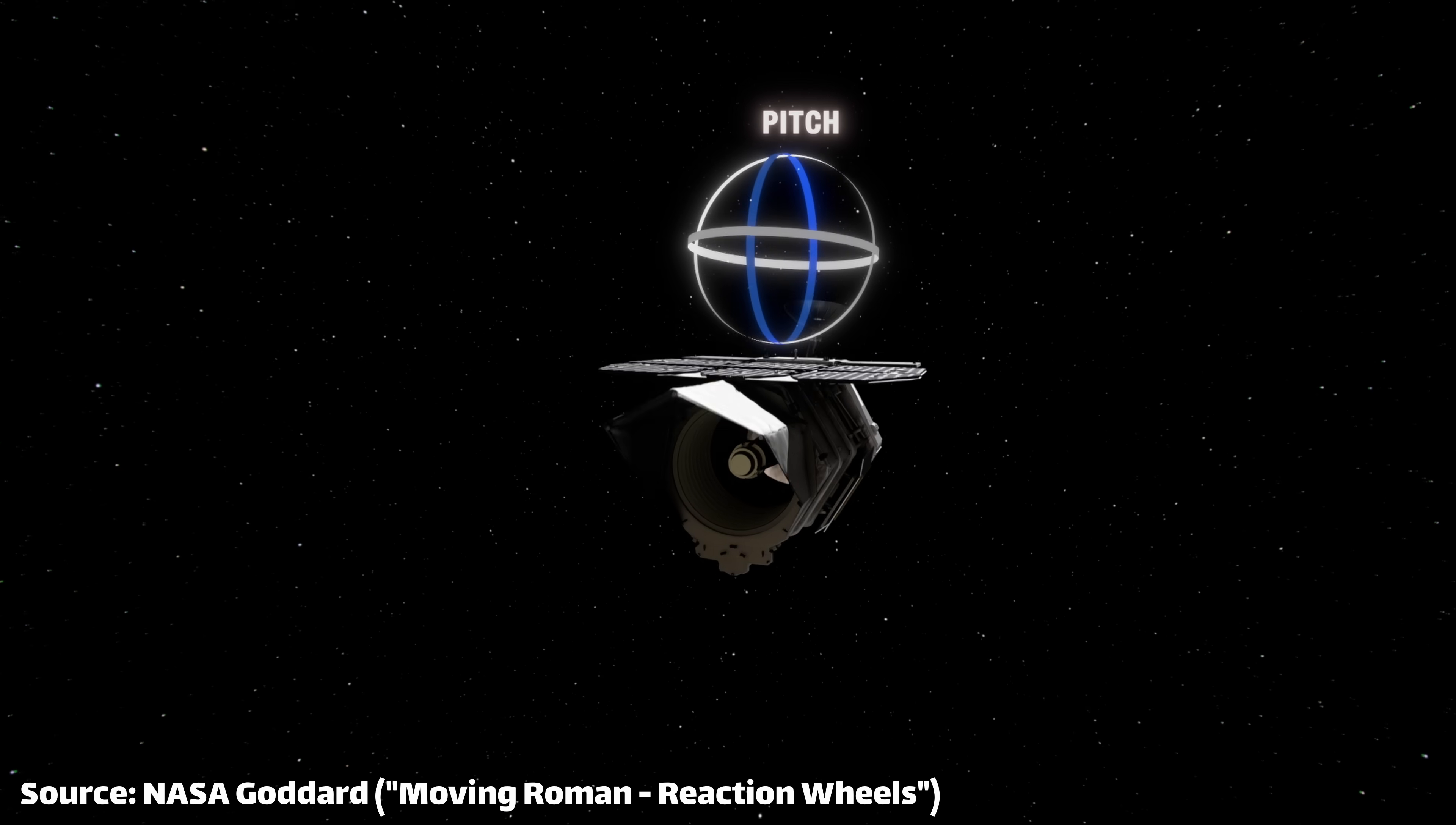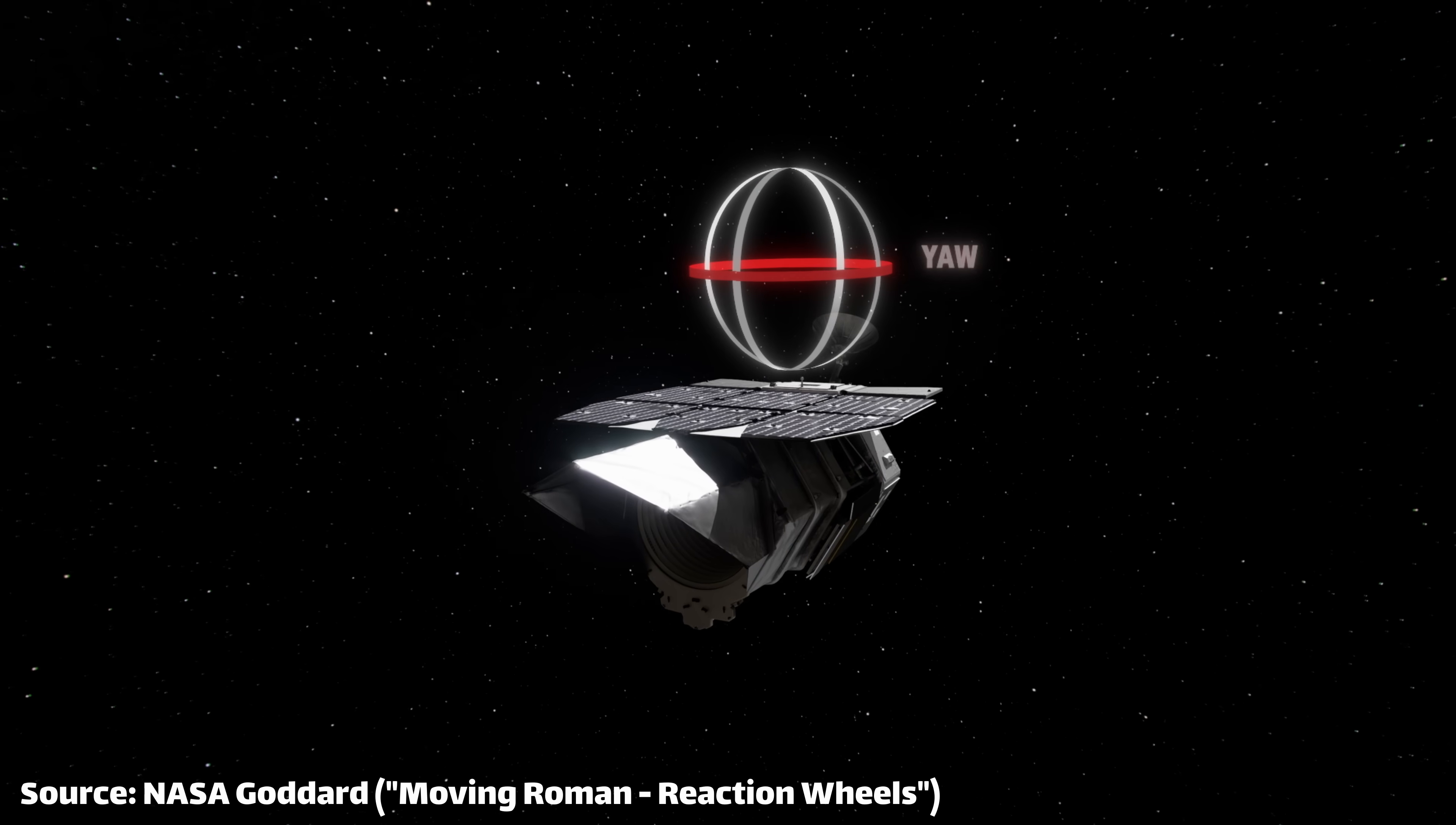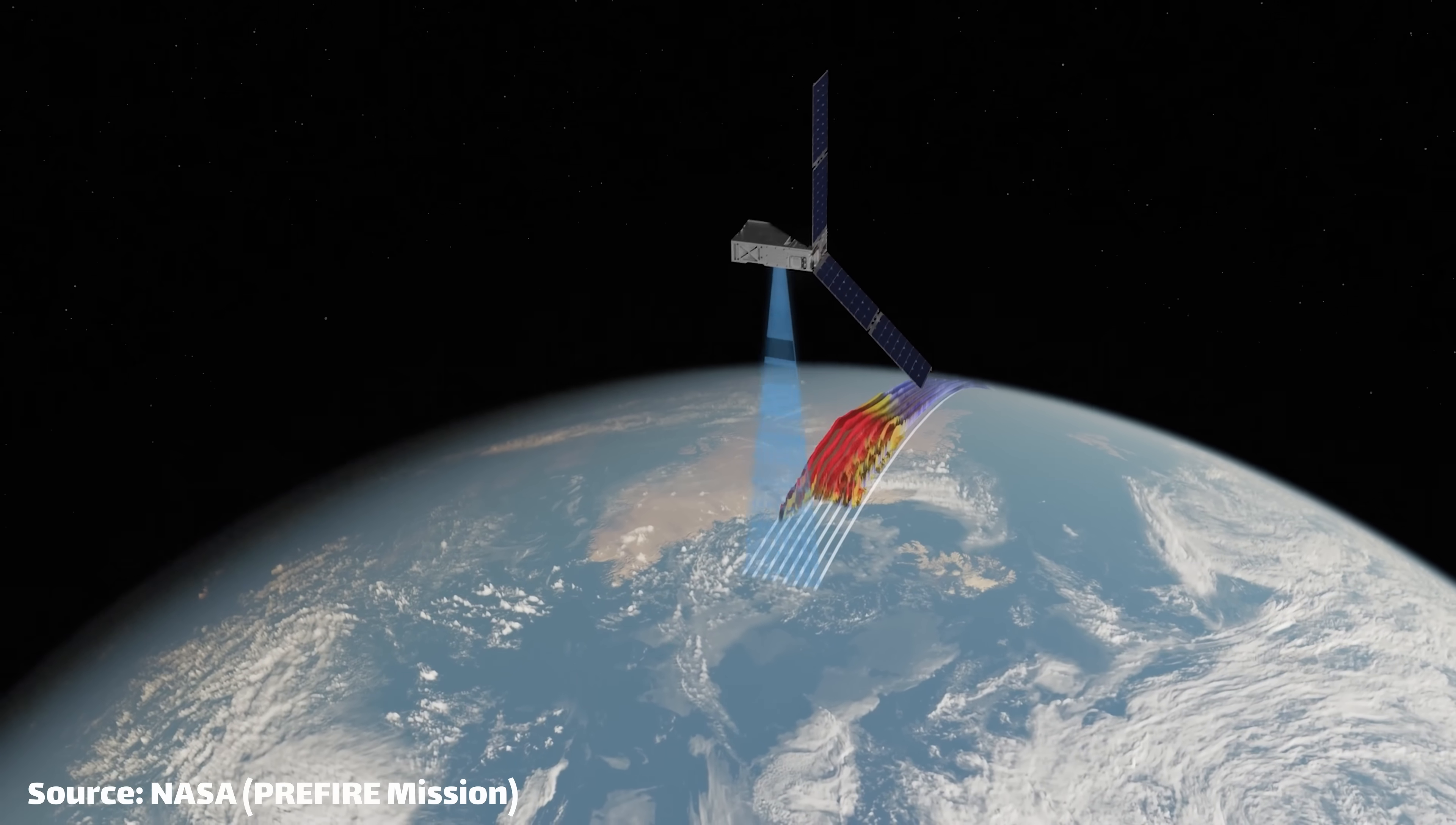you can control the flying position and orientation of a satellite and point it at a target of interest, like a feature on the ground that you're tracking or distant galaxies.